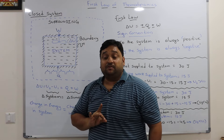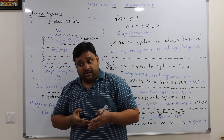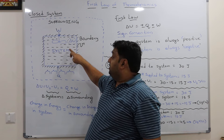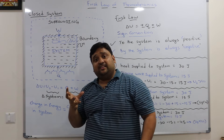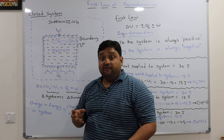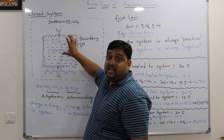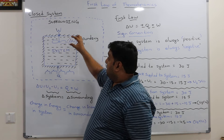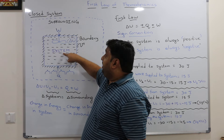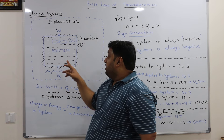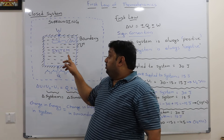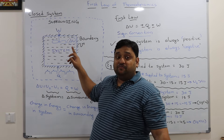There is another way to change the internal energy that we will not discuss in detail here: conducting some sort of chemical reaction. If it is an exothermic reaction, heat will be released; if it is an endothermic reaction, heat will be absorbed. So to change the internal energy of the system, I can supply heat, supply work, or conduct a chemical reaction — these are the three methods.